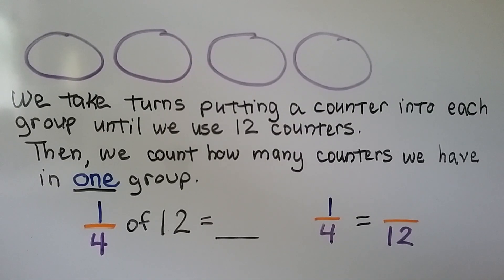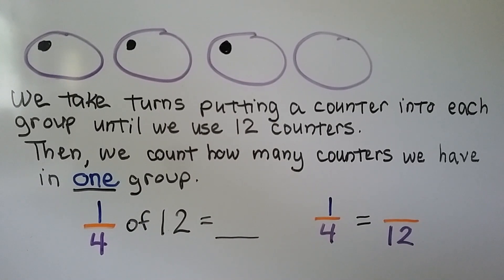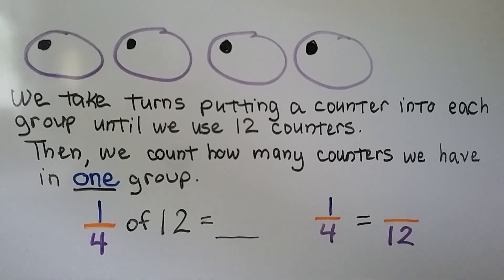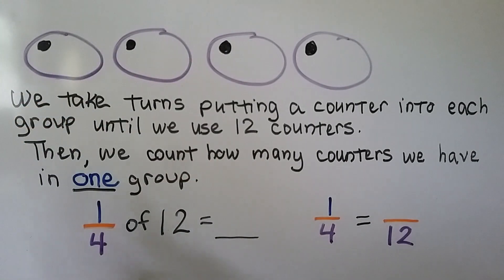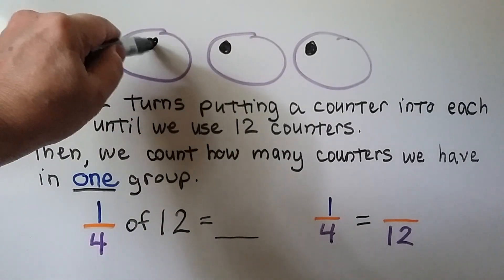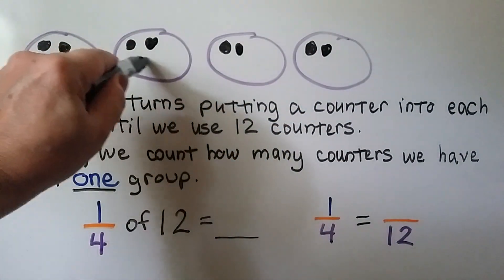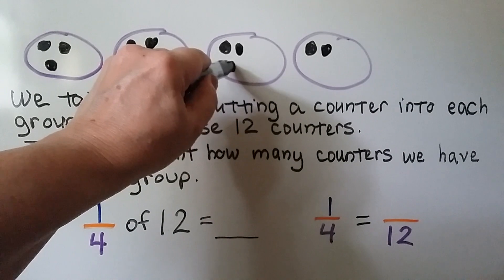We take turns putting a counter into each group until we use 12 counters. Remember, this denominator — the four — tells us we need four groups. We take turns putting counters in each group until we get to 12: one, two, three, four, five, six, seven, eight, nine, ten, eleven, twelve.